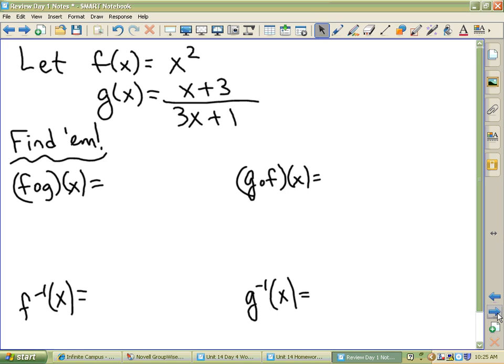F of g of x, g of f of x. And then, just for good measure, we're going to find f inverse and g inverse. Not bad. We'll find those, just for kicks and giggles. F of g. That's f of that thing. Which means I've got to know what the f function does. What does the f function do? I've got to square something. Square what? That! Nicely done, Sam. X plus 3 over 3x plus 1 quantity squared. Would you like to simplify that? Me neither.